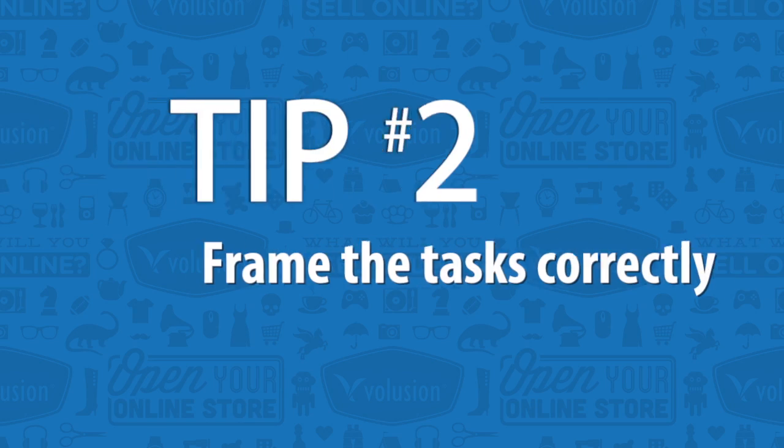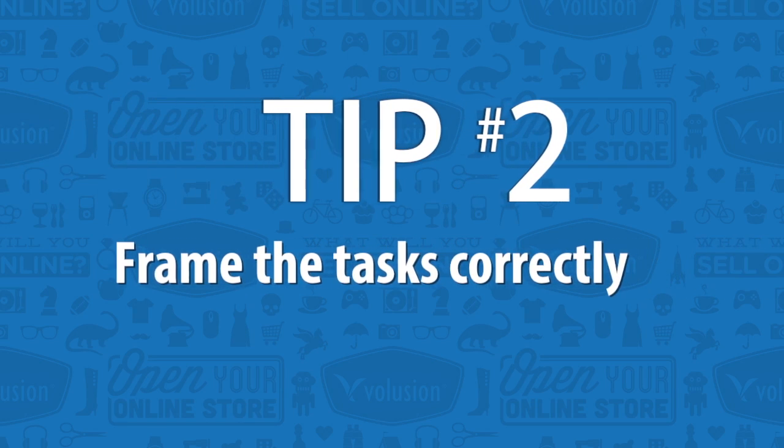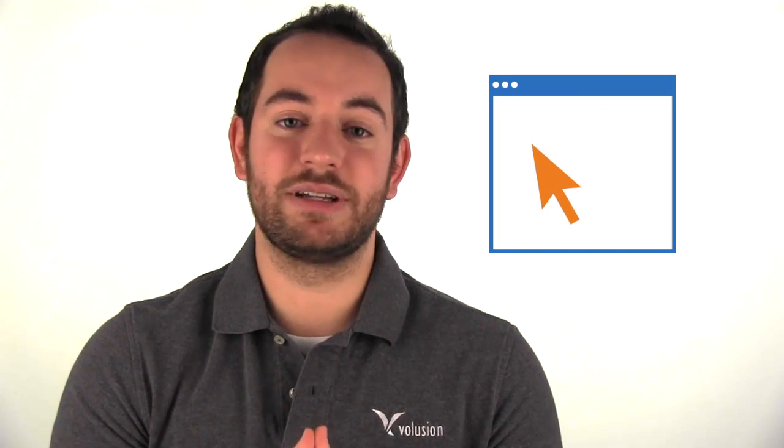Number two, you'll want to frame the tasks correctly. Once you have that specific goal in mind, you want to make sure that you ask them to do what you want them to do without telling them too much. If you say, find our about us page, all they have to do is go click about us. So frame it to be more complex. Say, for example, you're looking for something to watch the Super Bowl on — find that product. It makes a lot of difference and gives you much better results.